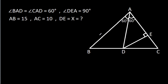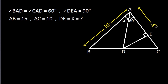In this video, we have been given that Angle BAD is 60 degrees, Angle CAD is 60 degrees, and Angle DEA is 90 degrees. AB is 15, AC is 10, and DE is X. We have to find X.